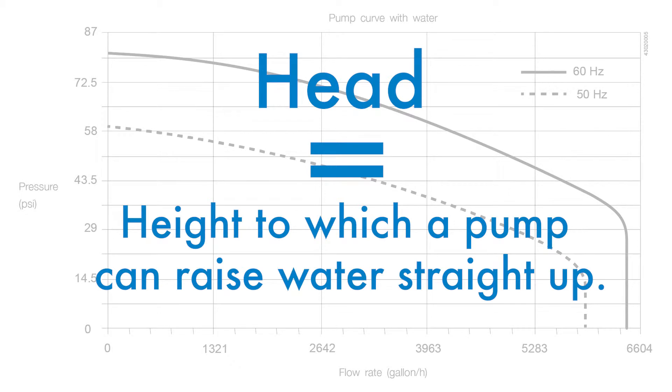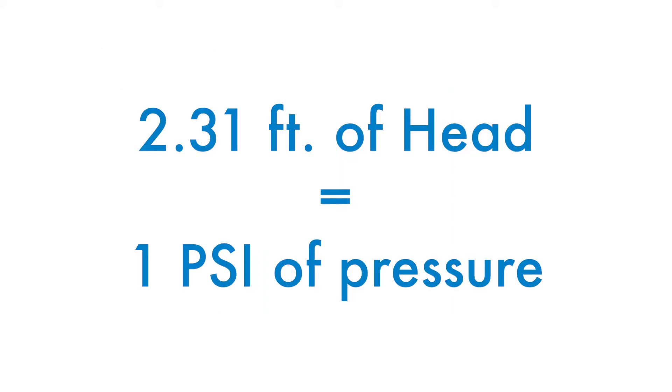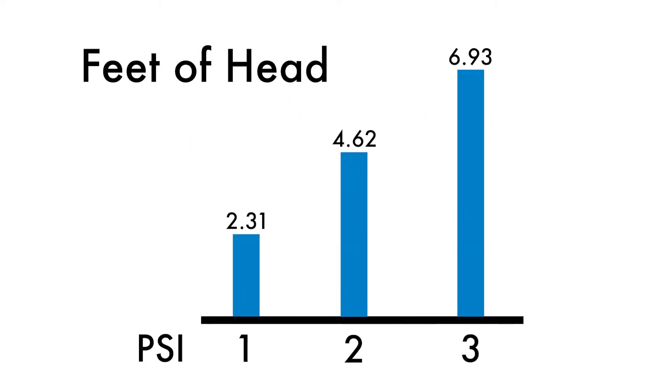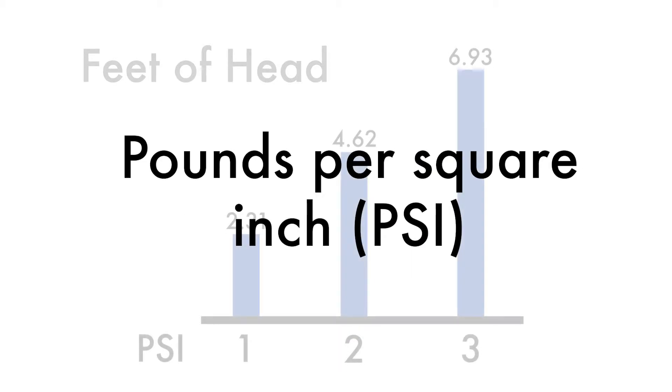Head is the height to which a pump can raise water straight up. Water creates pressure or resistance at predictable rates. For example, every 2.31 feet of head equals 1 psi of pressure. Common units for indicating pressure are feet of head and pounds per square inch.